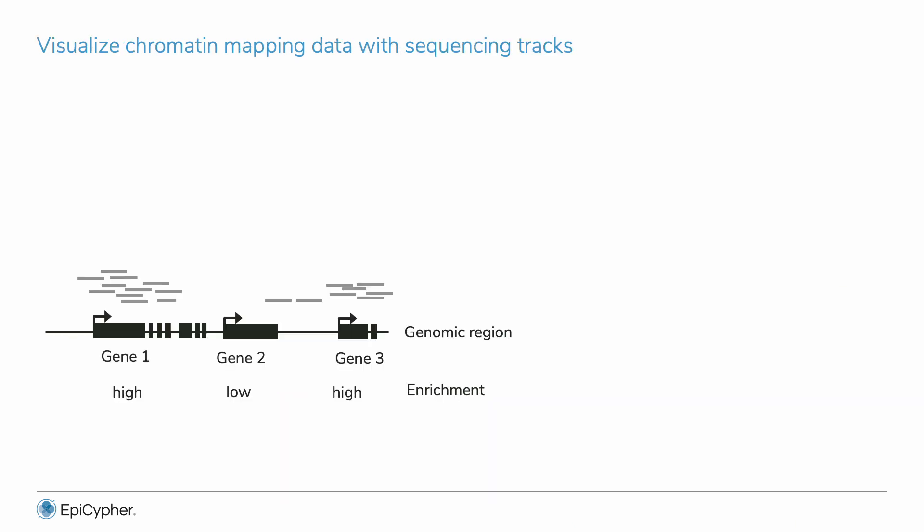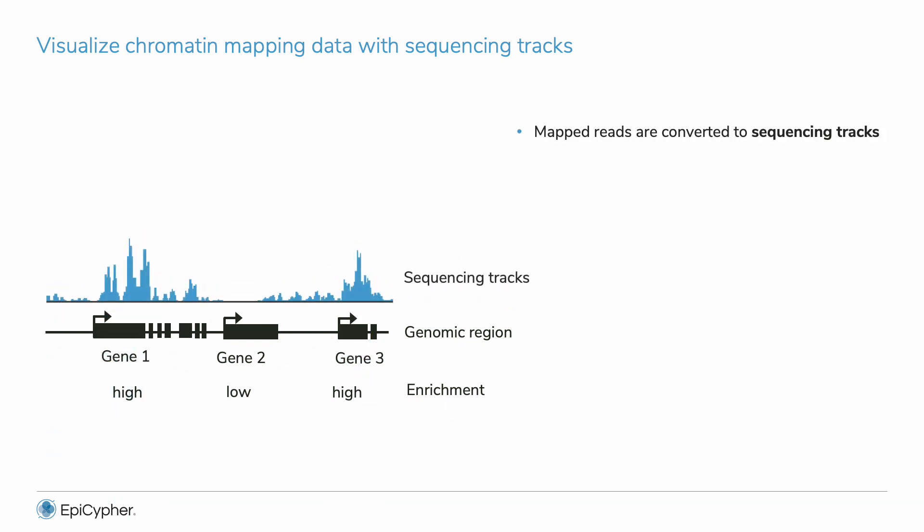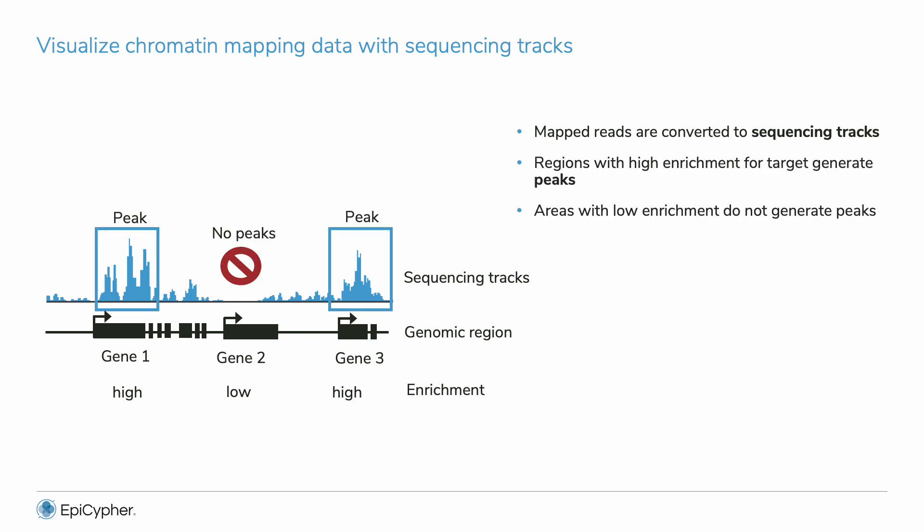To visualize data, aligned reads are normalized and used to generate sequencing tracks. More mapped reads or enrichment generates peaks in sequencing tracks, and no enrichment means there are no peaks. Tracks are generated for the whole genome — we are just looking at one area here — but you can look up any gene you want and see how much of your target is bound.